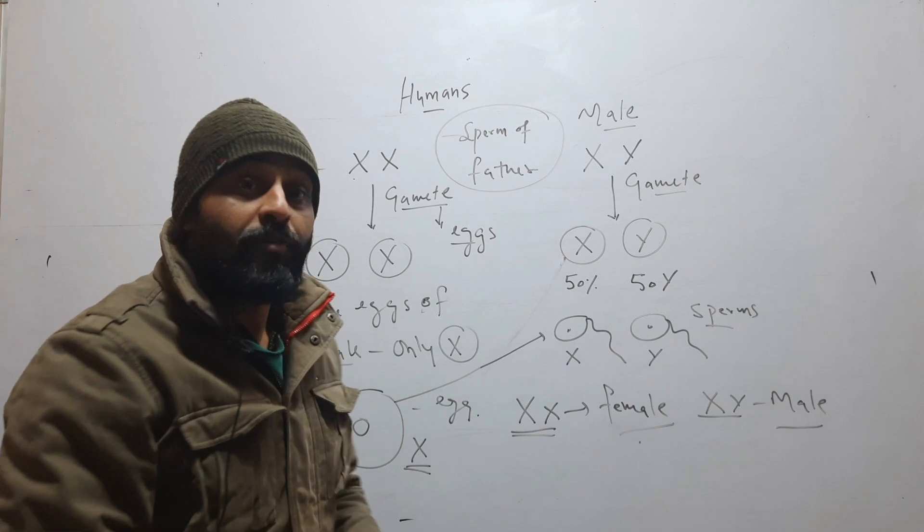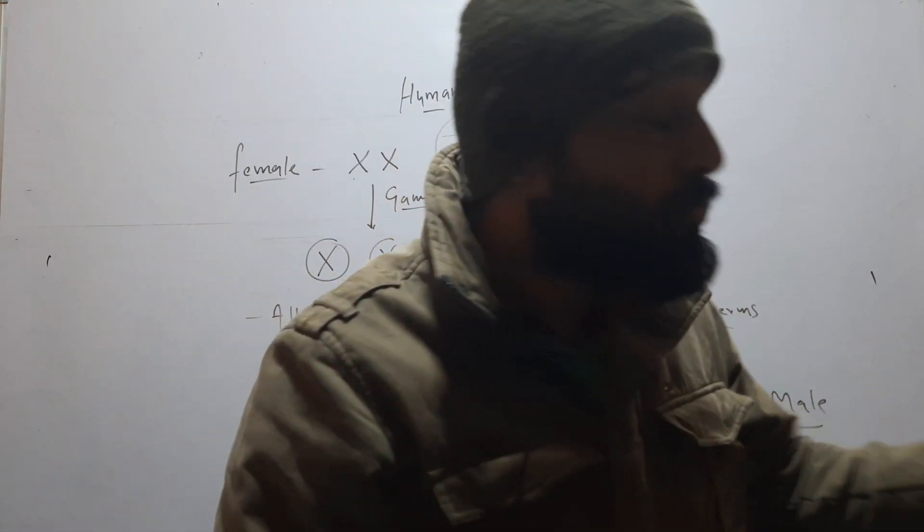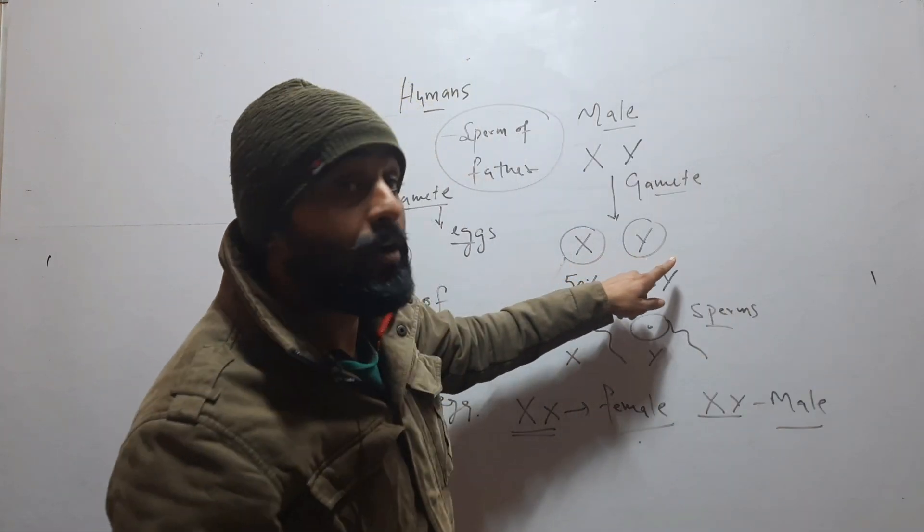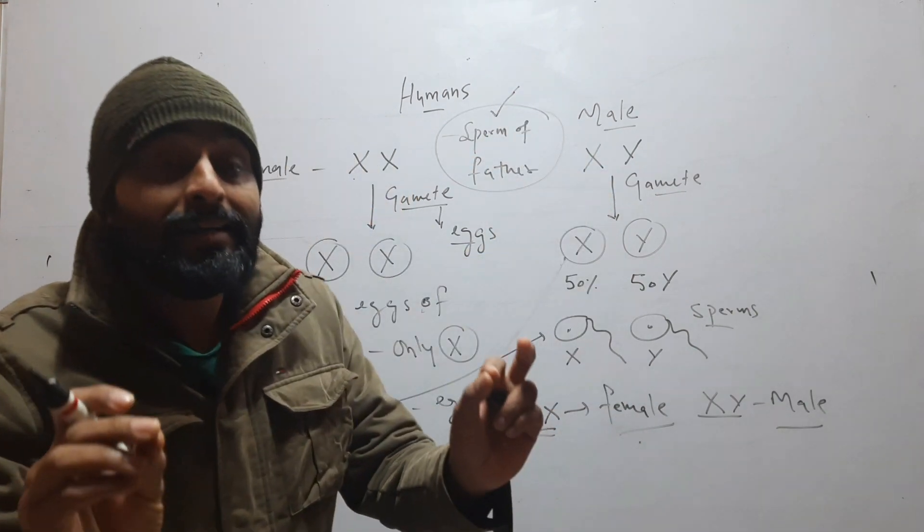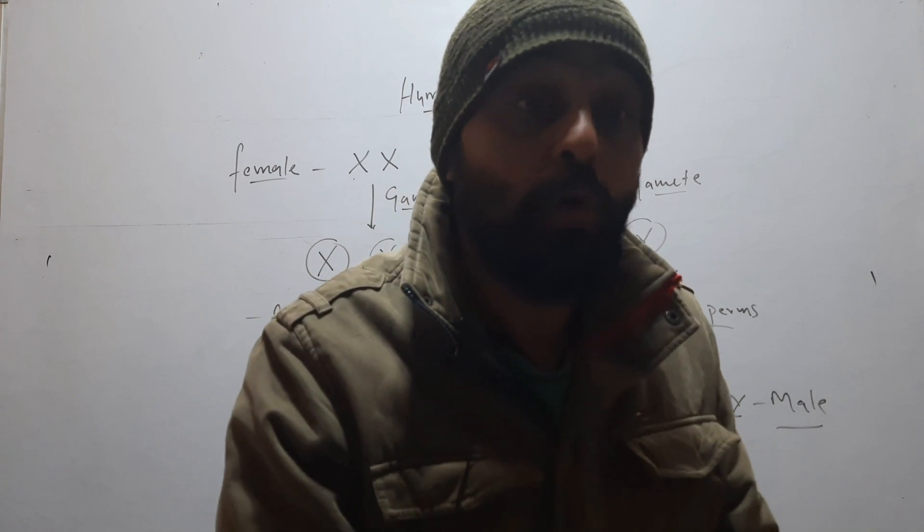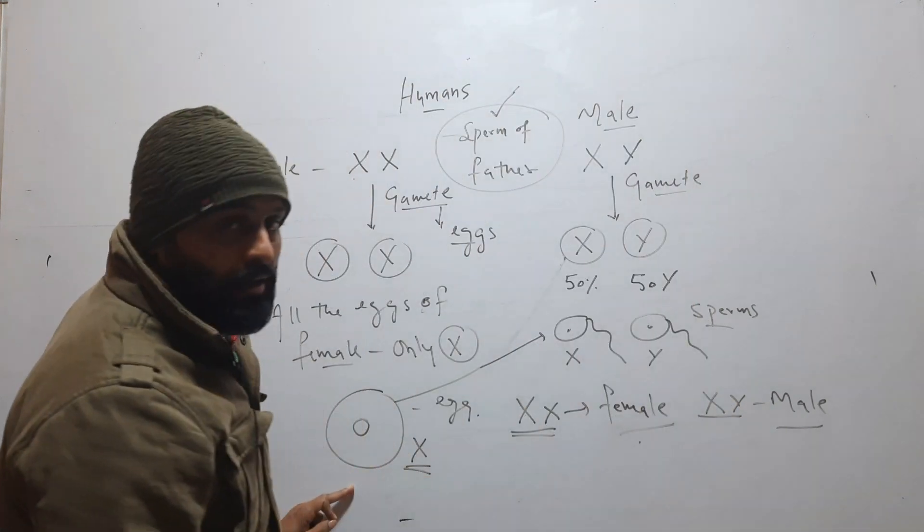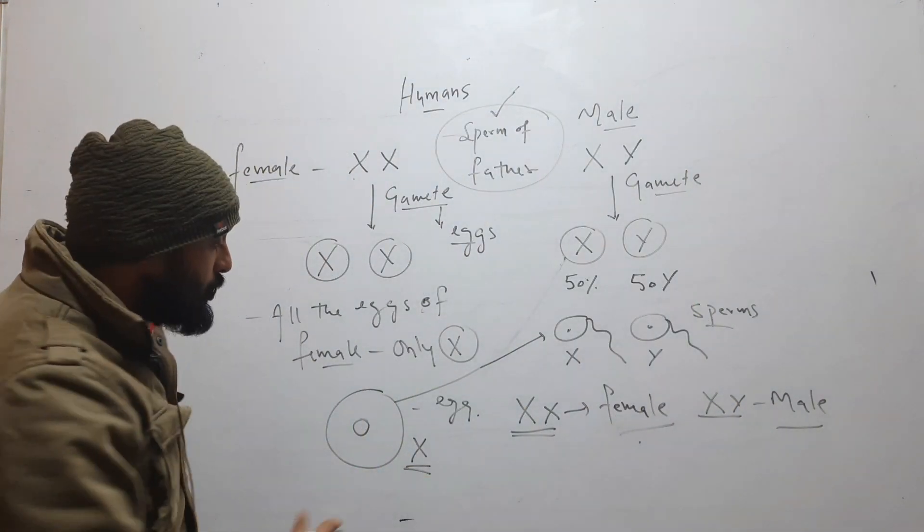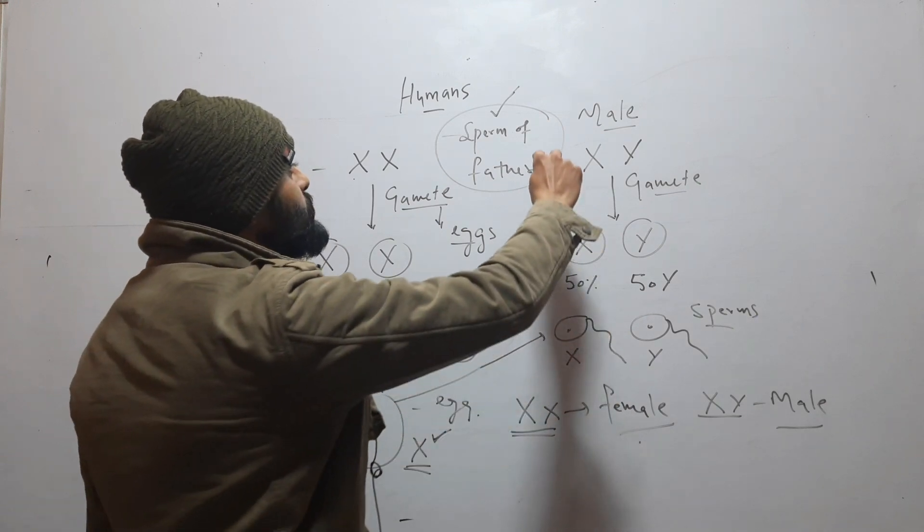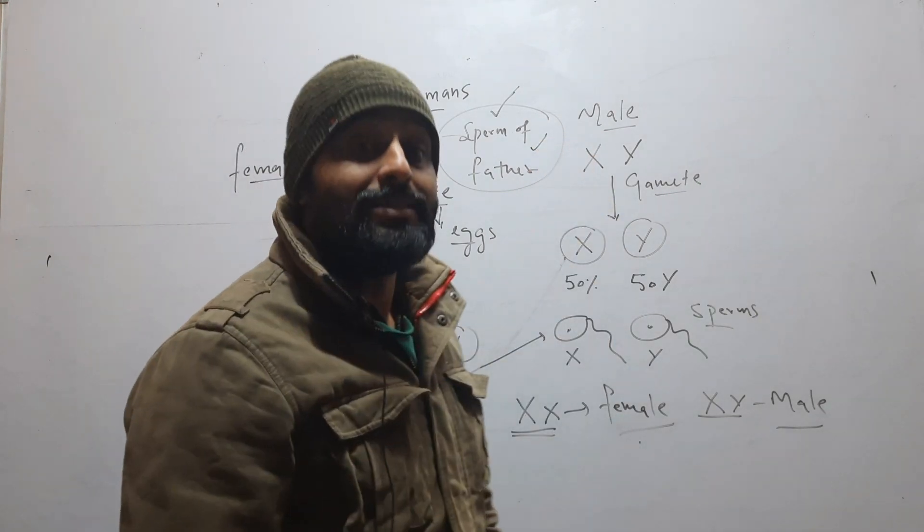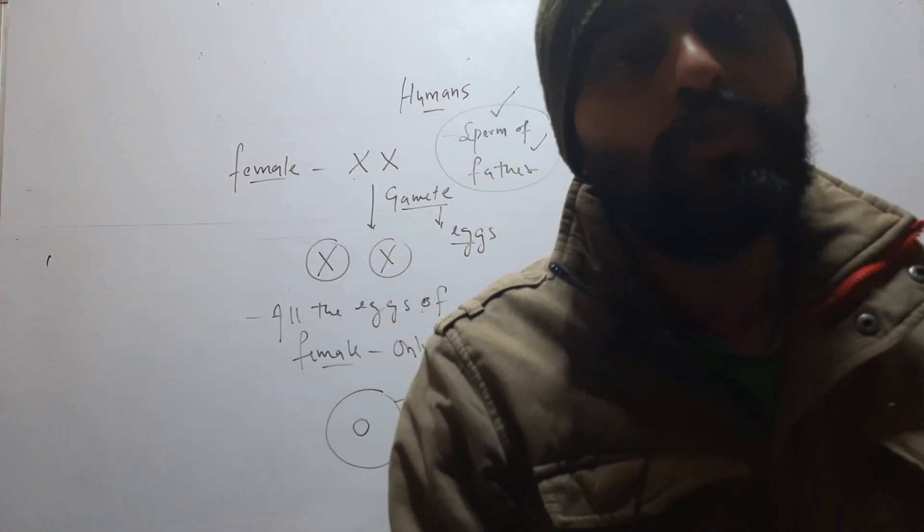Because the father has two types of sperm - one has X chromosome, another has Y chromosome. So it is the sperm of the father that is deciding the sex of the newborn baby, not the egg, because all the eggs always have X chromosome. So the sperm of the father will decide the sex of the newborn baby.